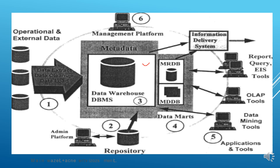The third component is metadata, which stores information about how data extracted from different sources — whether historical data, CSV files, flat files, or big data — is organized and stored. The data mart is mainly related to subjects: data related to each department, such as product data, sales data, or employee data. Depending on different subjects and departments, how the data is organized is stored in the data mart. MRDB and MDDB refer to how multi-dimensional data is stored in the DBMS.